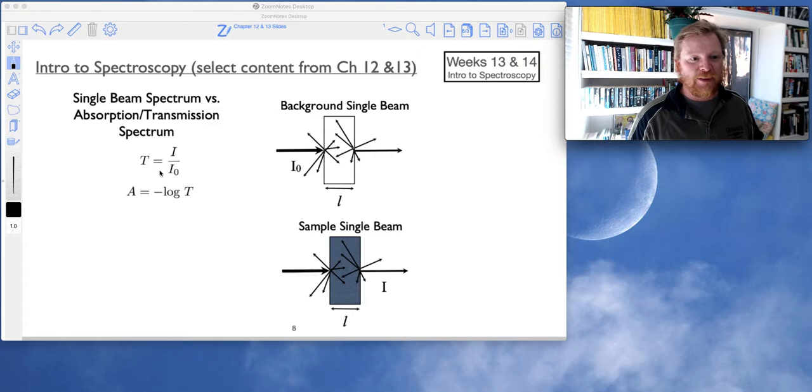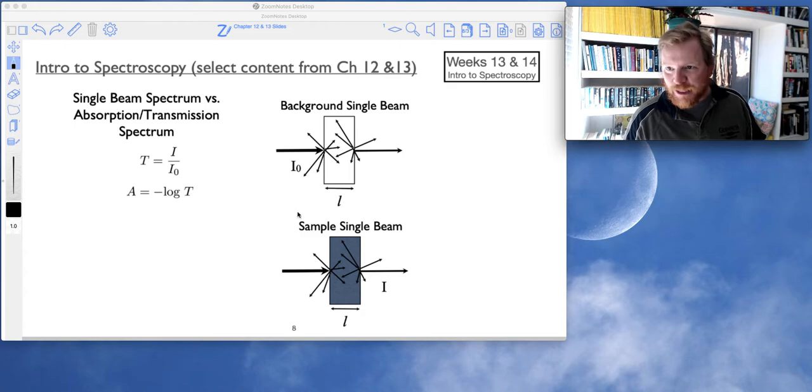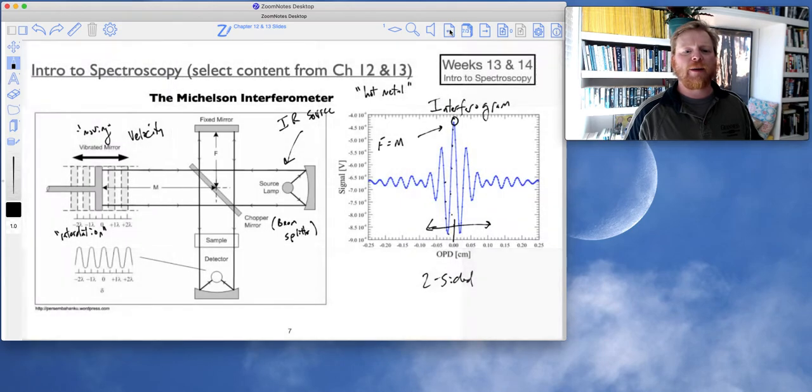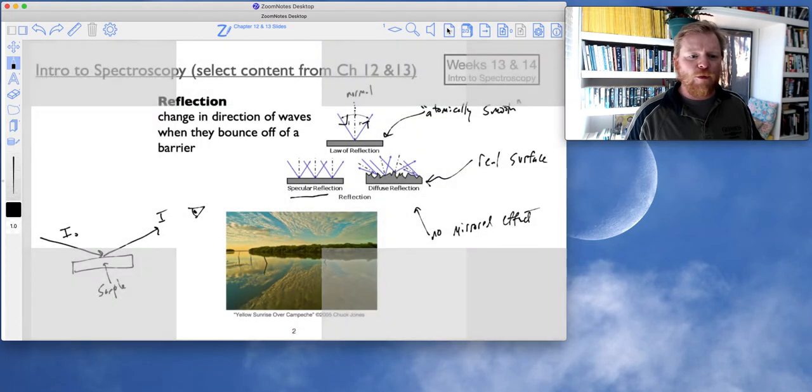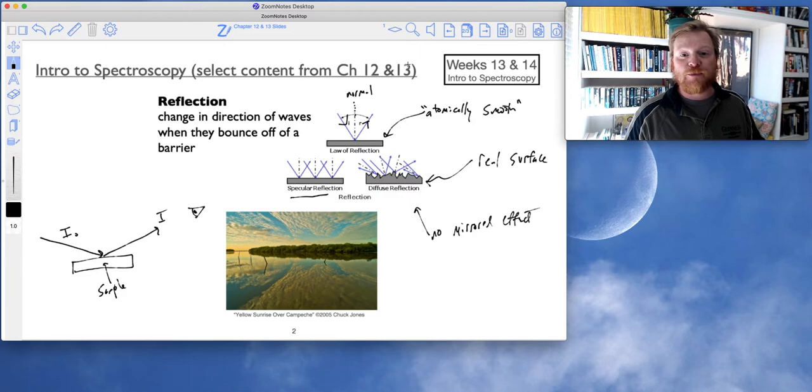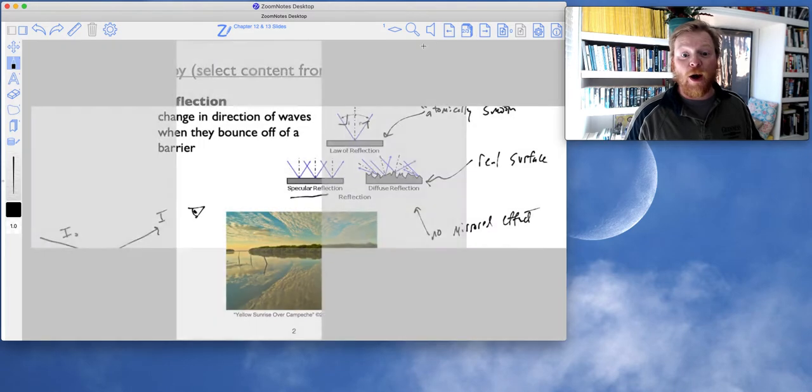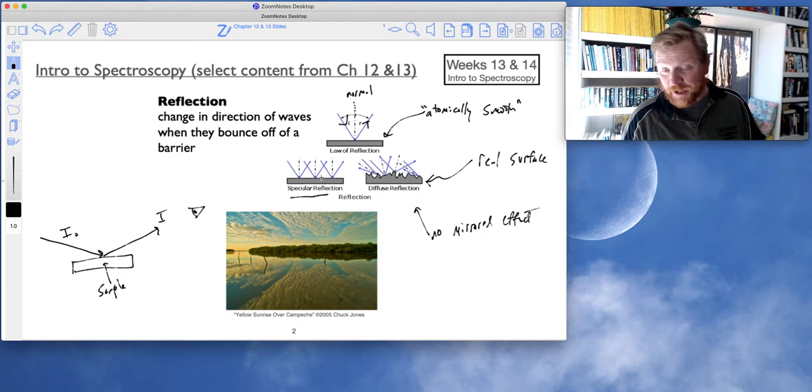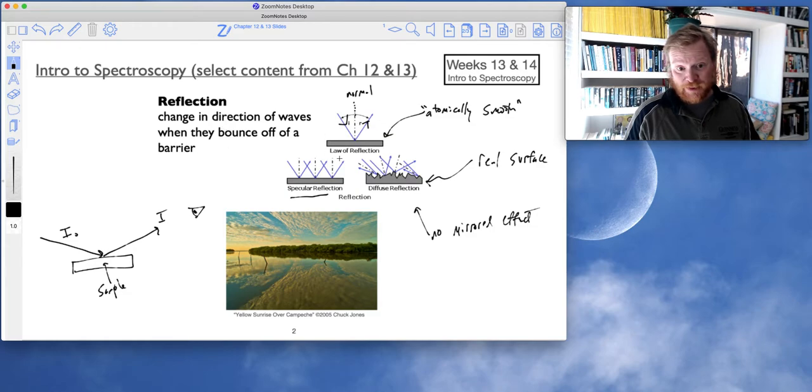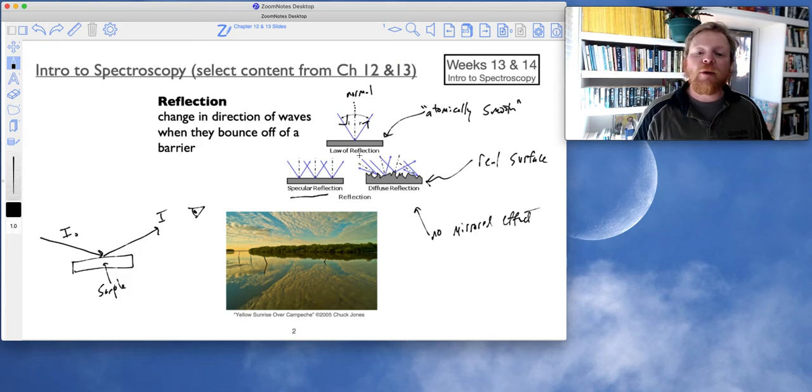And what I want to get into is something that I think is really important for applied spectroscopy. So background versus sample spectra. I'll remind you of all of these various photophysical processes that are occurring when light interacts with the sample. So we can get reflection. That reflection can be specular or diffuse, depending on the quality of our surface.